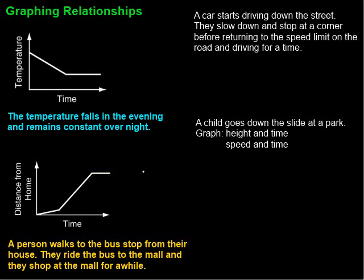Let's take a look at the next two situations and see if we can come up with a graph. For this first one, it says a car starts driving down the street. They slow down and stop at a corner before returning to the speed limit and driving for a time. The two values we're working with are time and speed.